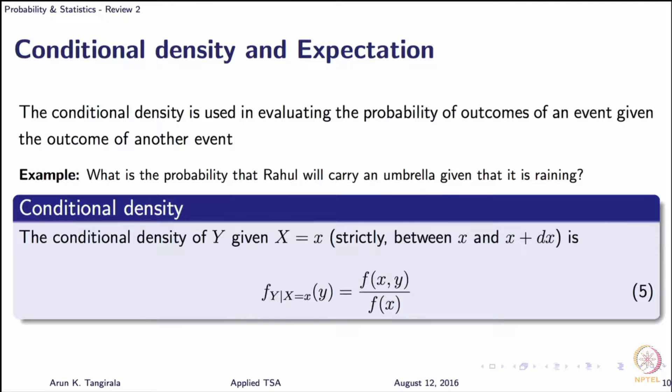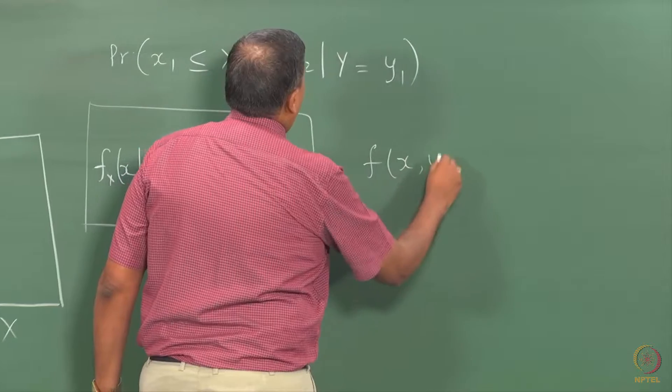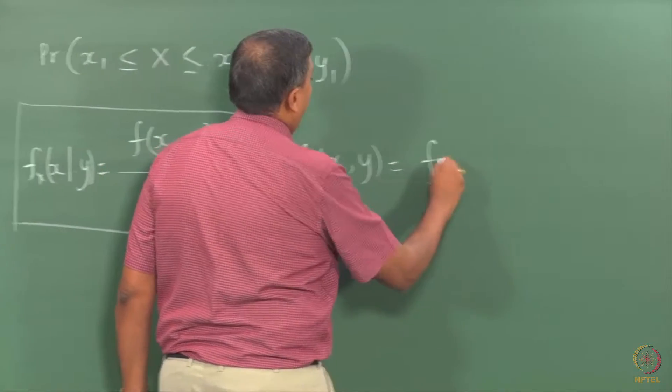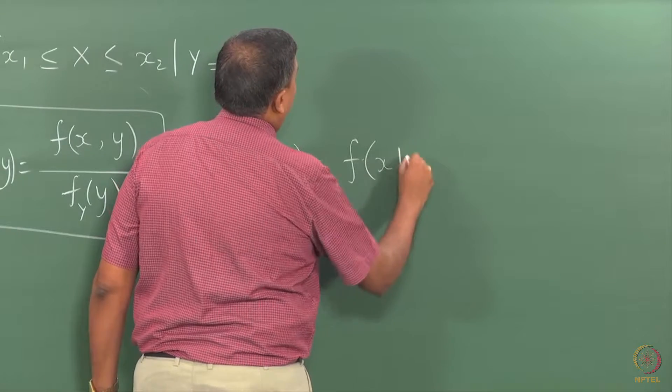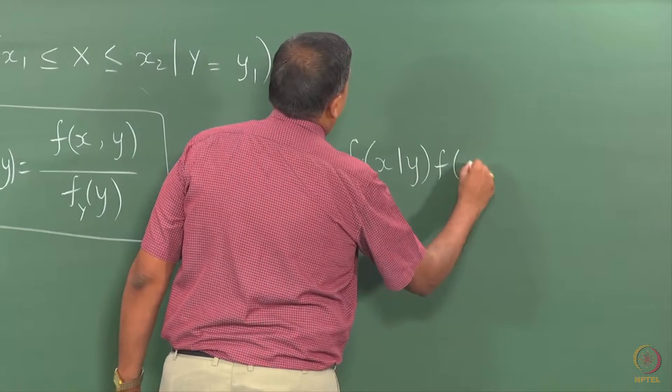As I have written here, the conditional density of y, in this case I have written on the slide for y, but on the board I have written for x. This offers a nice way of writing the joint density as a product of the conditional densities and the marginal density.